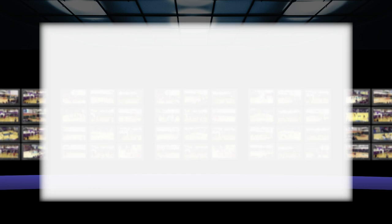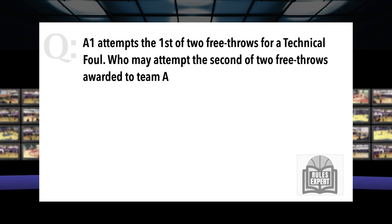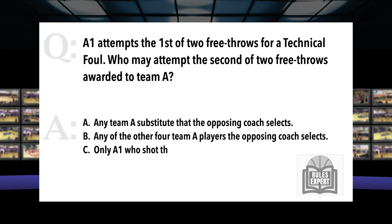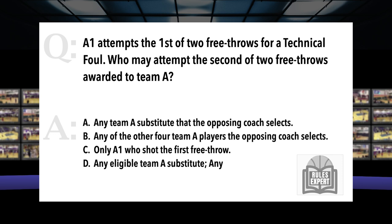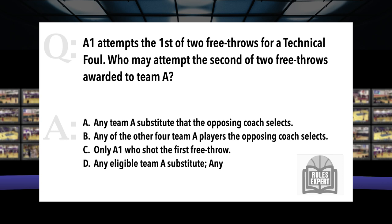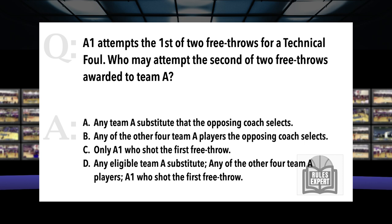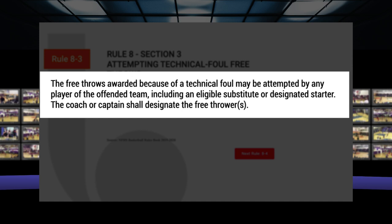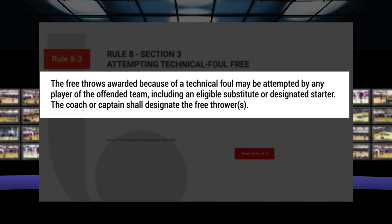Question. A1 attempts the first of two free throws for a technical foul. Who may attempt the second of the two free throws awarded to Team A? Answers: A. Any Team A substitute that the opposing coach selects. B. Any of the other four Team A players the opposing coach selects. C. Only A1 who shot the first free throw. Or D. Any eligible Team A substitute, any of the other four Team A players, or A1 who shot the first free throw. We're going to find the answer in Rule 8, Section 3, attempting technical foul free throws. The free throws awarded because of a technical foul may be attempted by any player of the offended team including an eligible substitute or designated starter. The coach or captains shall designate the free thrower.